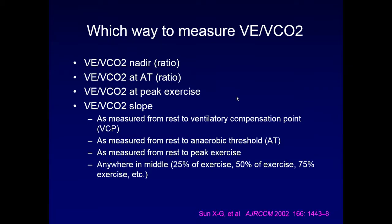There are multiple ways to measure VE/VCO2 in the literature. You can measure the VE/VCO2 at the lowest number — the nadir — as a ratio. You can measure it at anaerobic threshold, which is what we do in our lab. You can measure it at peak exercise. You can measure the slope of the VE/VCO2, which requires at least two points: rest to ventilatory compensation point, rest to anaerobic threshold, rest to peak exercise, or anywhere in between.